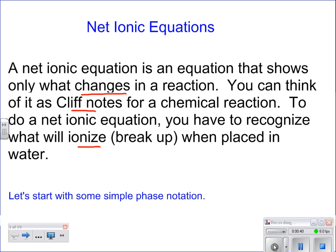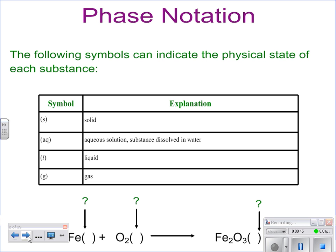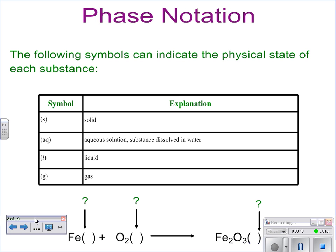Ionizing happens when compounds are placed in water. In order to understand what that means, we need to know something about phase notation. You know three of these pretty easily: solid, liquid, and gas, illustrated with S, L, and G. For aqueous, this is a little bit different than liquid.